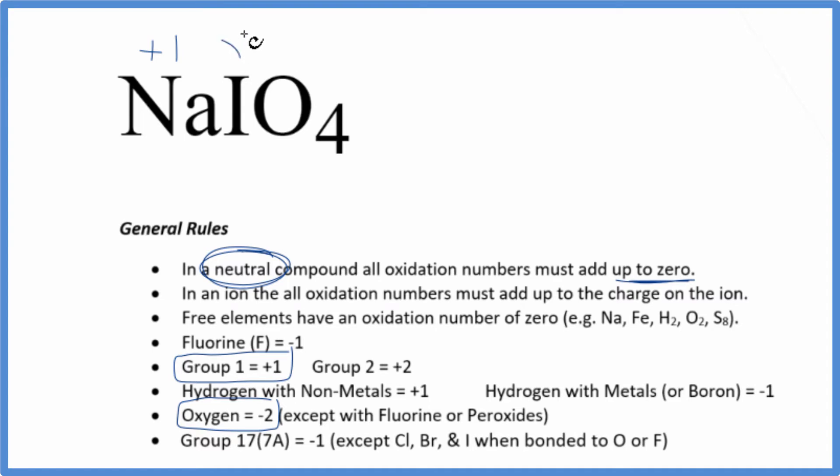So we're gonna call the iodine X, the oxygen minus two. You'll often think of iodine as having a minus one oxidation number because it's in group 17, except when it's bonded to things like oxygen and fluorine. So since it's bonded to oxygen, we don't know its oxidation number just looking at it.